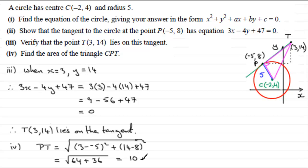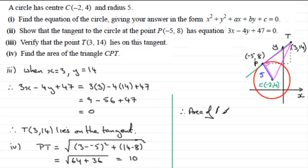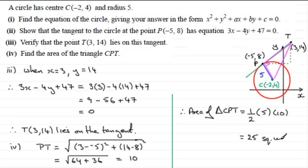It's not plus or minus 10 — we're just concerned with the length, so we take the positive value. So we've got the length of PT. Therefore, the area of triangle CPT equals half multiplied by the base, which is 5, multiplied by the height PT, which is 10. That gives us half of 50, which is 25. You could leave it as 25, though being an area I quite like to write square units — I'll leave that up to you.